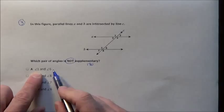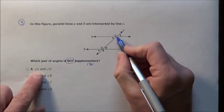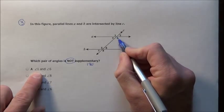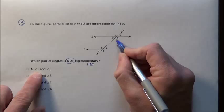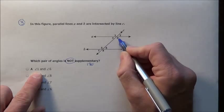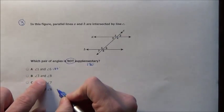Which ones are not supplementary? Angles 1 and 6 - that's a little difficult, but notice 1 and 4 are vertical, so they're equal. And we know 4 and 6 are consecutive interior angles on the same side of the transversal, so 4 and 6 add up to 180. Since 4 equals 1, these do add up to 180 degrees.